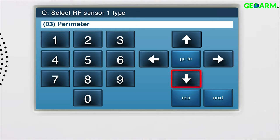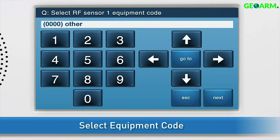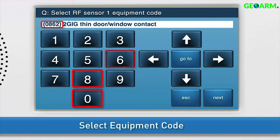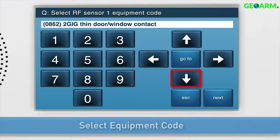Once the desired sensor type displays in the answer box, press the down arrow to go to the next sub-question. Select the equipment code. 0000 Other will display in the answer box by default. Press the right arrow until 0862 2G thin door window contact displays in the answer box. You can also type 0862 to select this option. Press the down arrow to go to the next sub-question.